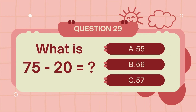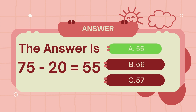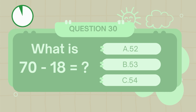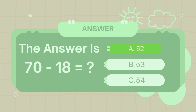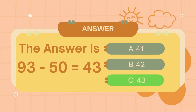What is 97 minus 43? The answer is 55. What is 70 minus 18? The answer is 52. What is 93 minus 50? The answer is 52. The answer is forty-three.